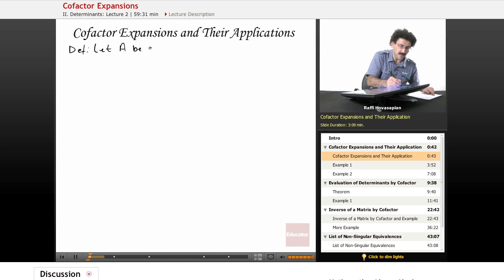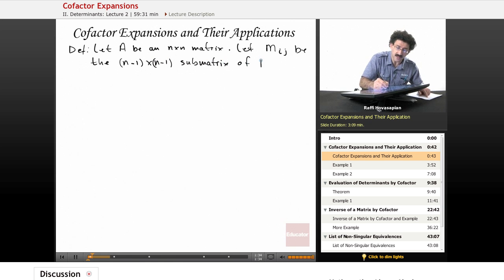As always, we will let A be an n by n matrix. And we will let M, capital M, sub ij be the n minus 1 times n minus 1 submatrix. And again, these definitions are more for formal purposes, once we actually do examples, anything that seems a little strange and unusual here will make a lot more sense of A obtained by deleting the i-th row and j-th column.